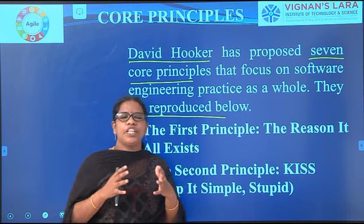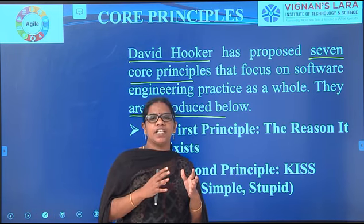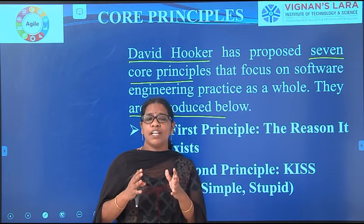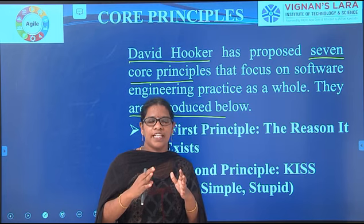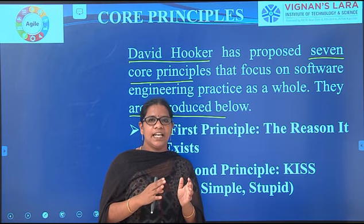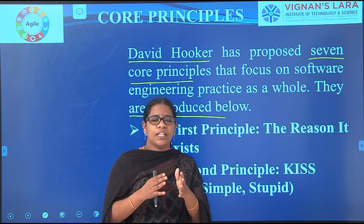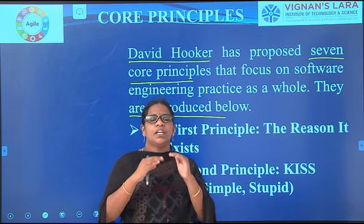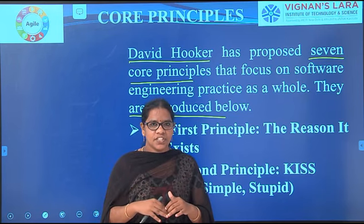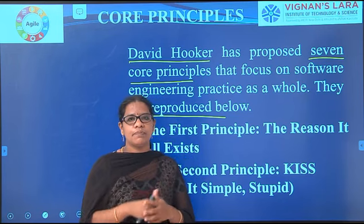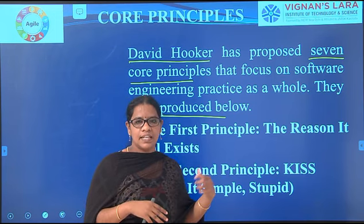Software engineering is a process which has to be carried out in a disciplined and quantifiable manner. Whatever steps we are following, it has to have some plan, some analysis, some design — it has to go in an engineering structure. That is why David Hooker proposed these seven principles.